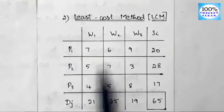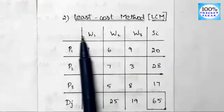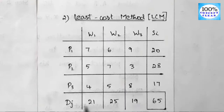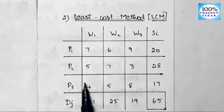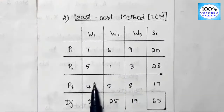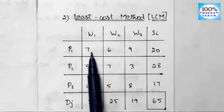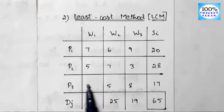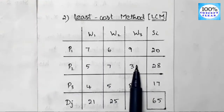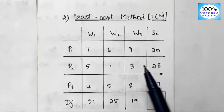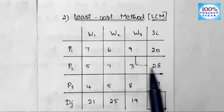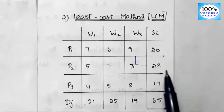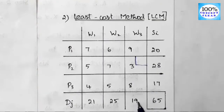Among the nine cost elements — 7, 6, 9, 5, 7, 3, 4, 5, 8 — the least value is 3. So we locate that cell first. Now compare demand and supply: supply is 28 and demand is 19. The least value is 19, so we allocate 19 to that cell. The demand becomes 0 and that column is cancelled. The remaining supply is 28 minus 19, which gives 9. First allocation is complete.